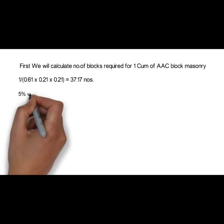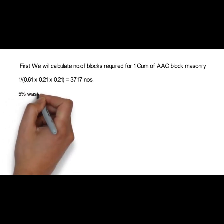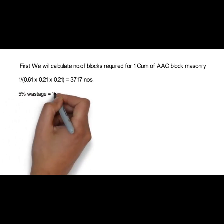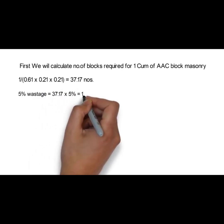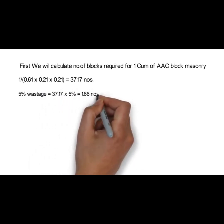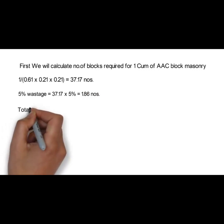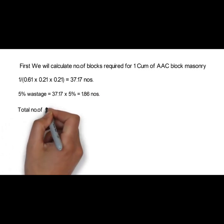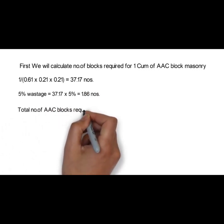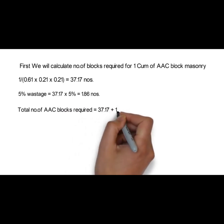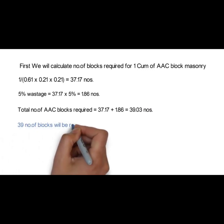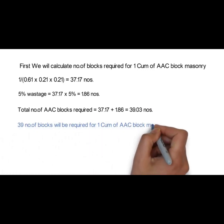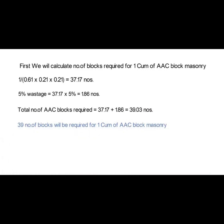Now we will consider 5% wastage in the blocks, which gives 1.86 numbers. So total number of AAC blocks required shall be 37.17 + 1.86 = 39.03 numbers. So approximately 39 blocks will be required for 1 cubic meter of AAC block masonry.